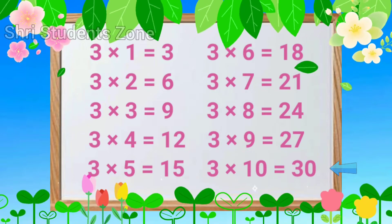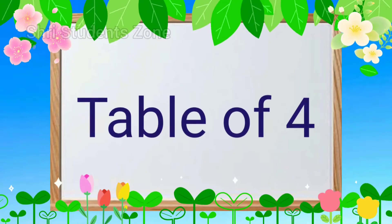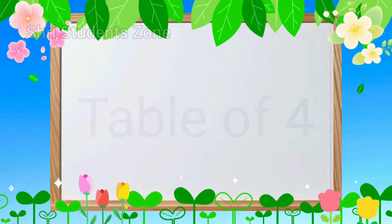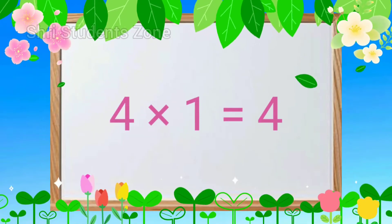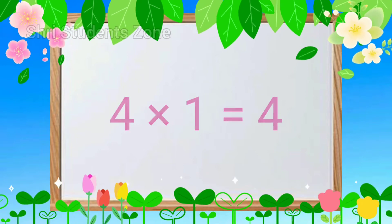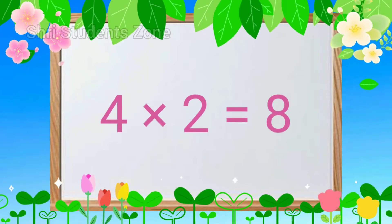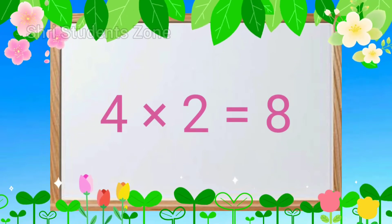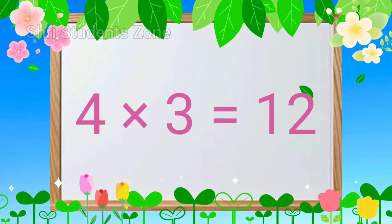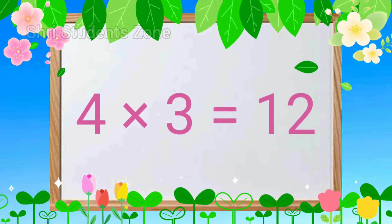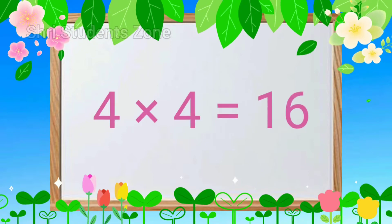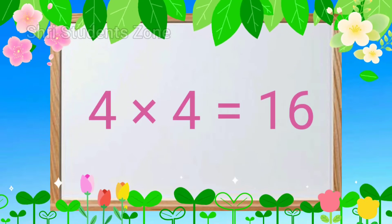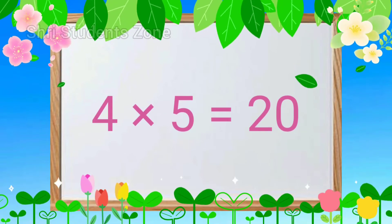Table of 4. 4-1s are 4, 4-2s are 8, 4-3s are 12, 4-4s are 16, 4-5s are 20.